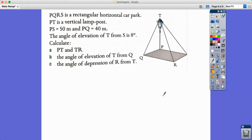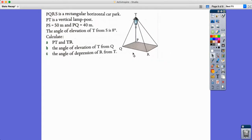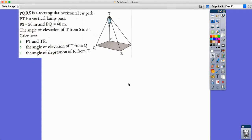We're going to be tackling a question that focuses on angles of elevation and depression. This one is actually quite tricky in that there's a lot to do in this question. PQRS is a rectangular horizontal car park, and one thing that has been chopped off is the S here, so let's not get confused by that.